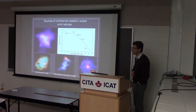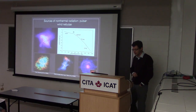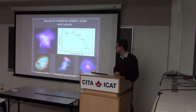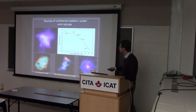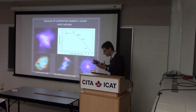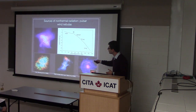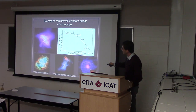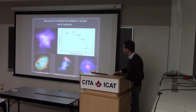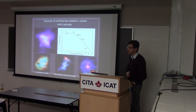A more extreme example is pulsar wind nebulae. Here, bulk Lorentz factors can reach up to 10^5 or 10^6. A rapidly spinning pulsar throws away a relativistic wind, which comes to a shock when it reaches ram pressure balance with the surrounding nebula. Presumably this shock accelerates particles, and you can see multi-frequency broadband power laws.